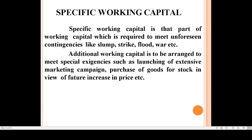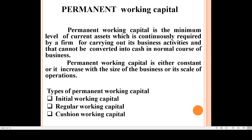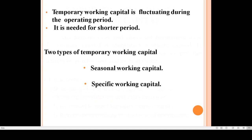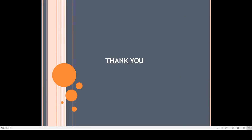To conclude, on the basis of time, working capital is divided into two: permanent working capital and temporary working capital. Permanent working capital is divided into three — initial, regular, and cushion working capital. Temporary or variable working capital is maintained over and above the permanent working capital, fluctuates from time to time, varies according to the volume of production, and is divided into seasonal working capital and specific working capital. Thank you very much.